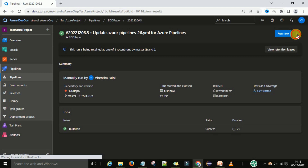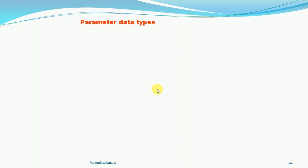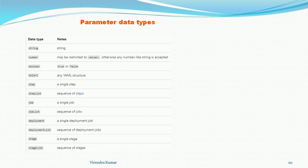Building is a string — a user-defined string — and build dot build number is the predefined variable, and this is printing the message. So your build is building with Ubuntu latest. Like that we can define the parameters and use them. Now let's understand the parameter data types. There are many data types available for parameters. We used string — we selected the operating system names which are in string format. You can also provide number, boolean, object, step, step list, jobs, job list, deployment, stages, and stage list.